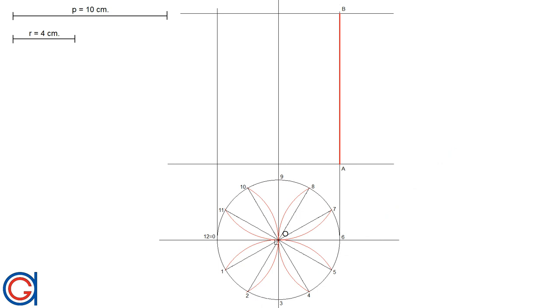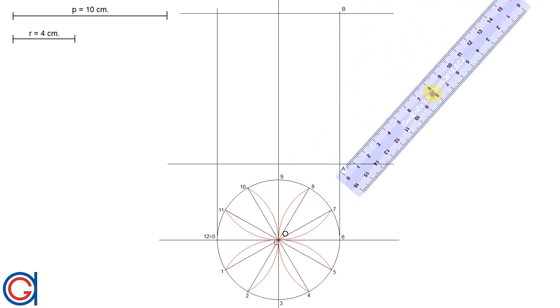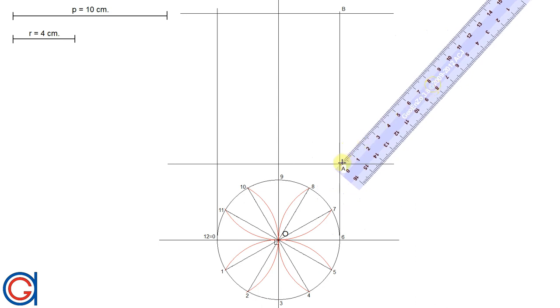We will divide the horizontal line from point A to point B into 12 equal parts using Thales theorem. We will start by drawing a line from point A at any angle as shown here.